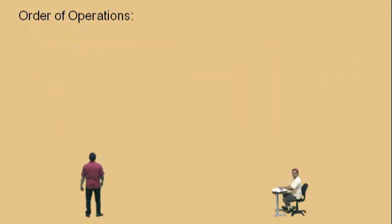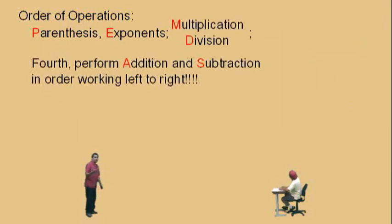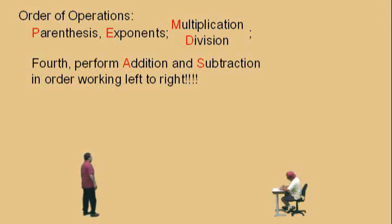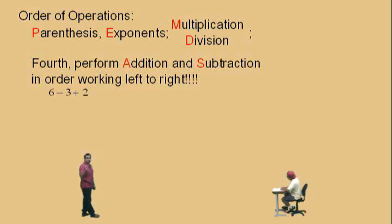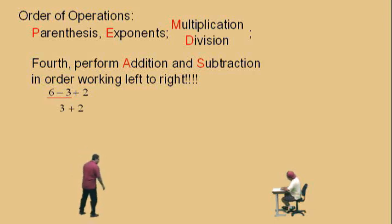Let's go to our last one now. We have parentheses, exponents, multiplication, division, and the last part is addition and subtraction. The fourth part is to perform addition and subtraction in order, working left to right, whatever comes first. So, 6 subtract 3 plus 2 — you cannot add the 3 plus 2 first. It doesn't say do addition before subtraction. You must do 6 subtract 3, which is 3, and then add the 2. What's 3 plus 2, Charlie? 5.